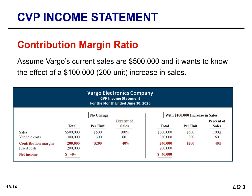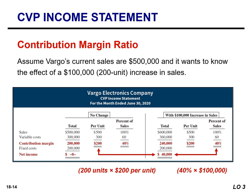If Vargo's sales increase by $100,000 or 200 units, net income will increase by $40,000. We can see this through a CVP income statement on the right side of the screen. This $40,000 increase can be calculated on a unit contribution margin basis — 200 units multiplied by $200 equals $40,000 — or using the contribution margin ratio: 40% multiplied by the $100,000 increase in sales dollars also equals $40,000.